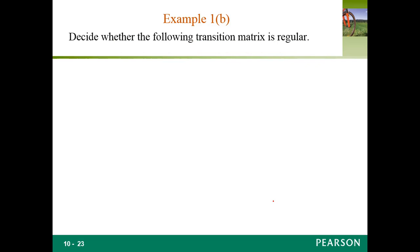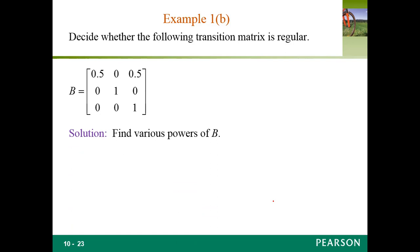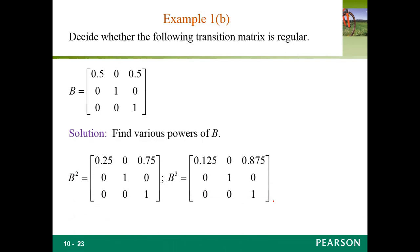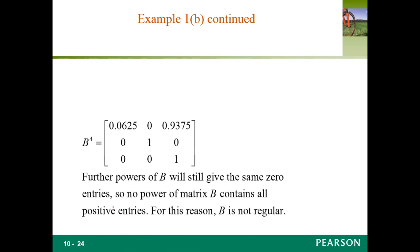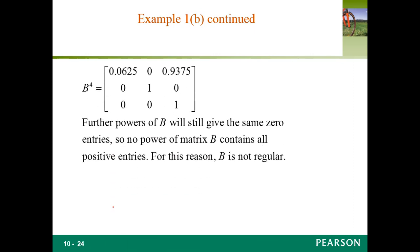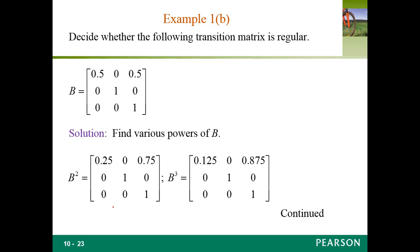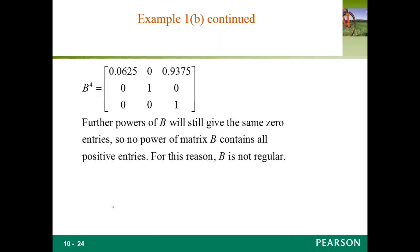Now decide whether the following transition matrix B is regular. It's a square matrix. We find B squared, B cubed. So far we still have some zeros in here. Further powers of B will still have the same zero entries — all the zero entries are the same. For this reason, B is not regular.